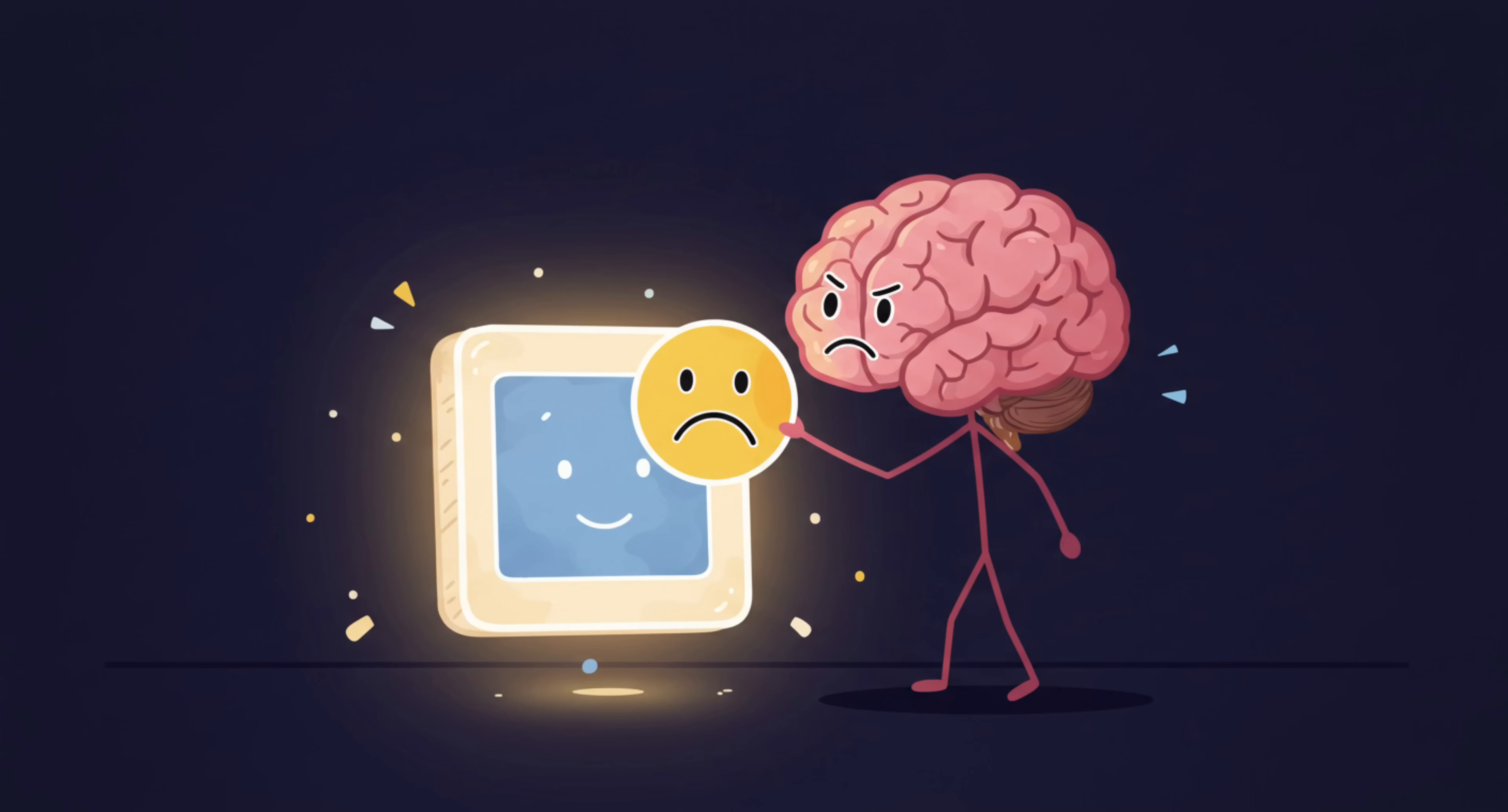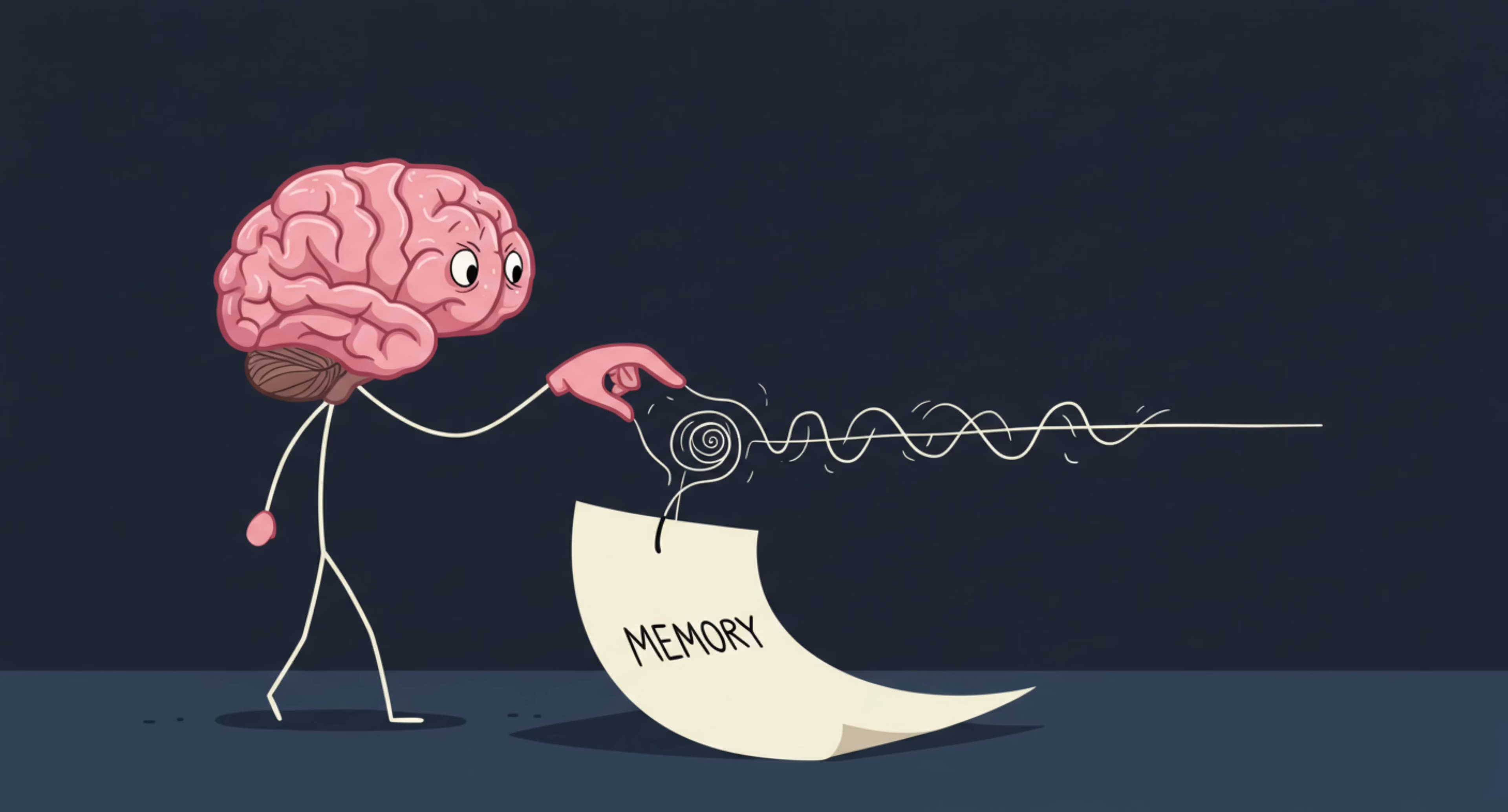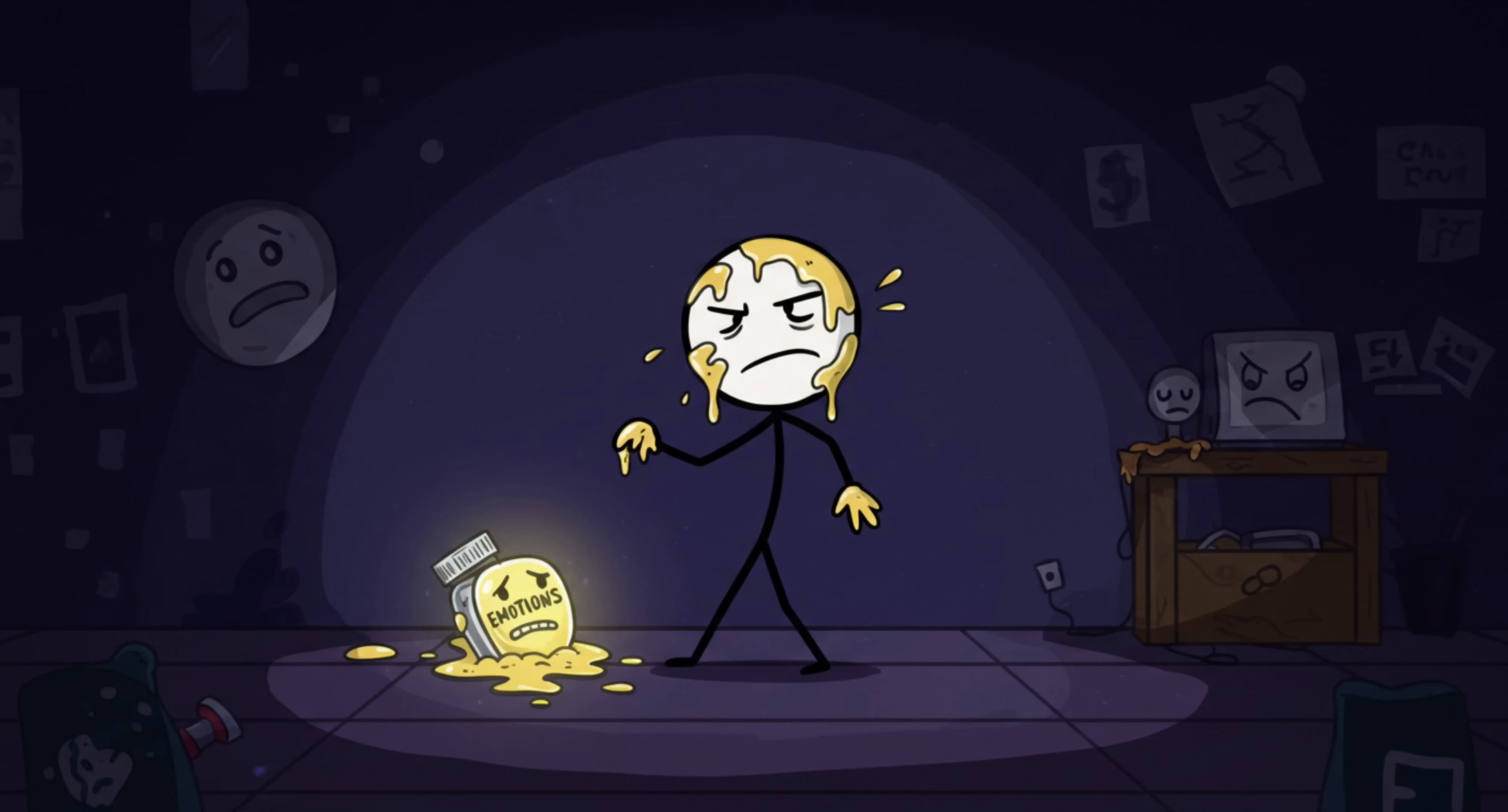Number 3, Emotional Hijack Memories. Here's a cruel trick. Stress doesn't just distort what you remember, it warps how you remember it. Specifically, it glues emotions onto your memories that may not even belong there.